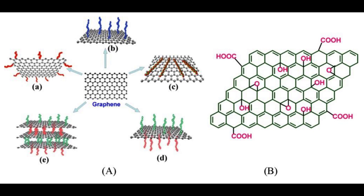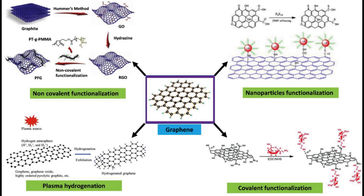Functionalization can be achieved through various chemical methods, including covalent and non-covalent approaches. In covalent functionalization, chemical groups or molecules are covalently bonded to the graphene lattice, which involves the sharing of electrons between carbon atoms and the functional group.